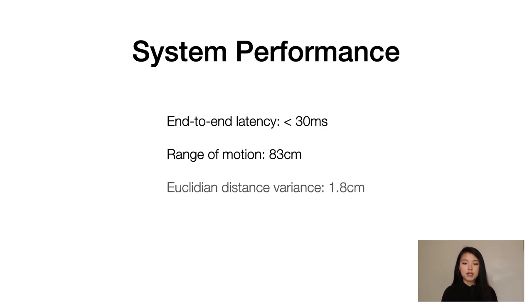Convincing haptic feedback needs to be spatially accurate. We measured a stop point when the finger collided with a static virtual plane at different movement speeds. We found a Euclidean distance error of a standard deviation of 1.8 centimeters.